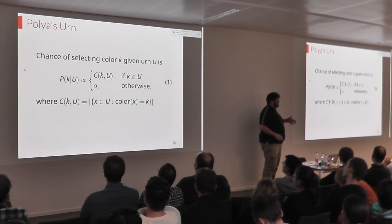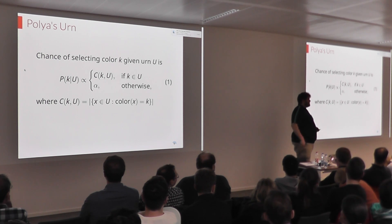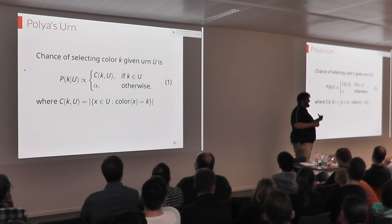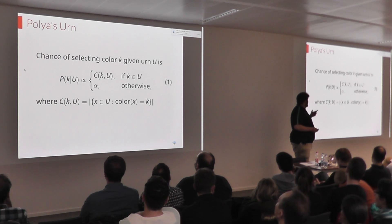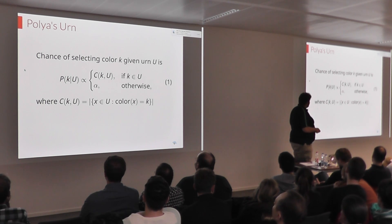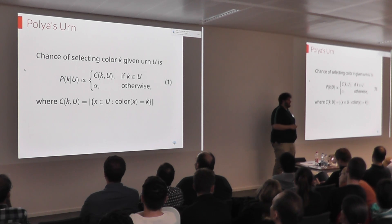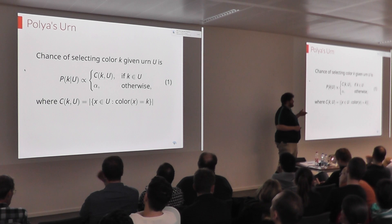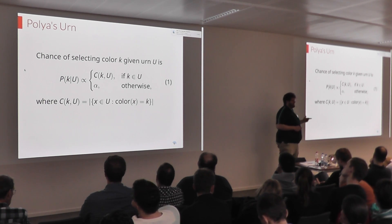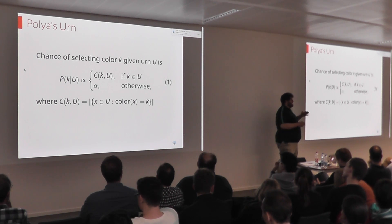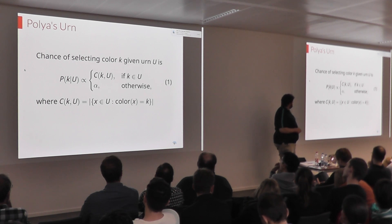The chance of selecting a color k — does alpha define how many clusters you have at the end? Alpha does not define how many clusters you have at the end, but it controls how likely you are at each step to choose a new cluster. The probability of selecting color k is proportional to the count of how many times we've already seen that color k in the urn. Otherwise it's proportional to alpha. To turn these into proper probabilities, divide by the number of balls in the urn plus alpha. You can see the chance of choosing a new color decreases over time as the urn gets fuller, because alpha is a fixed number of balls, not a fixed proportion.